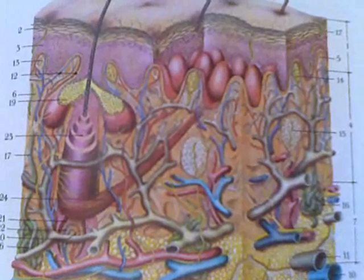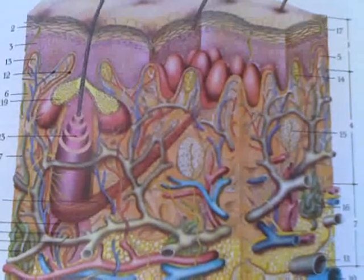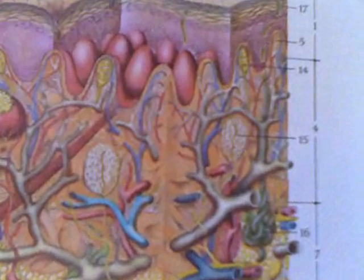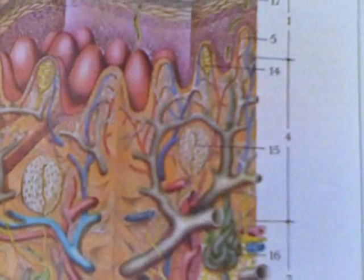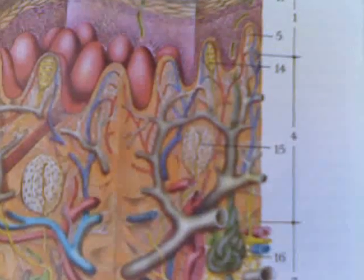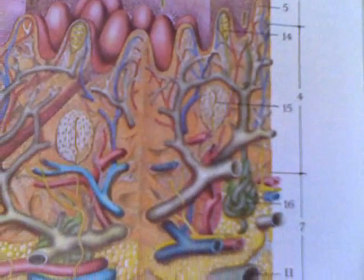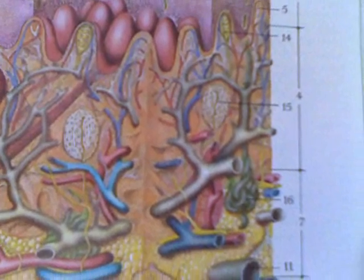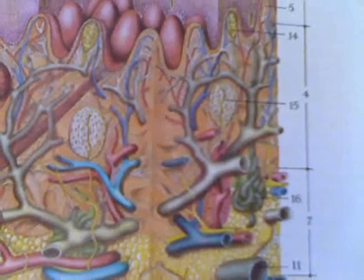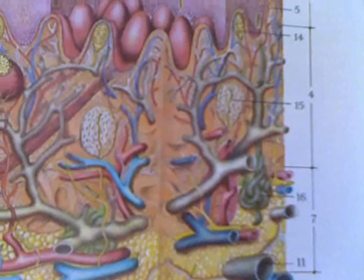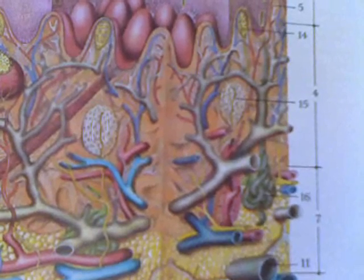Number fourteen is the Meissner pressure body — almost like a football-shaped type of body. And number fifteen, which looks a little bit like an onion, is a Pacini body, which communicates both pressure and vibrations.